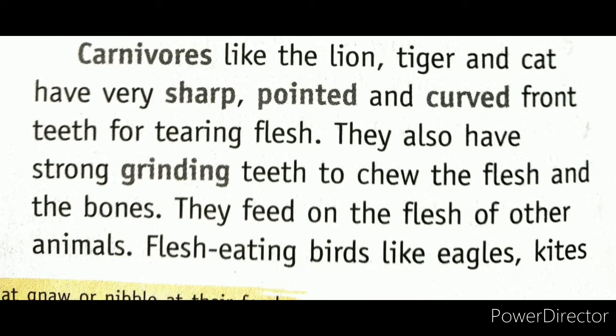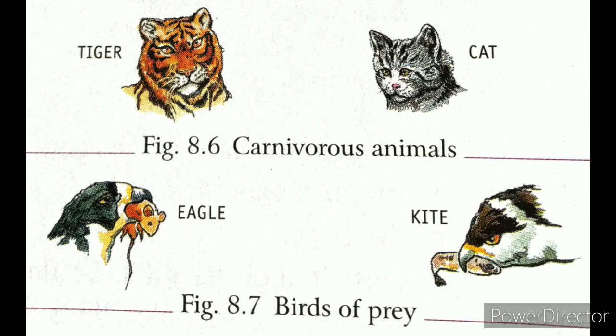Carnivores also have strong grinding teeth so they can crush flesh and bones. Some birds eat other birds or dead animals, such as eagles, kites, and vultures. If we talk about their beak, they are very strong, sharp, and hooked - with a small curve and bend. Their claws are also strong so they can catch their prey and tear the flesh.